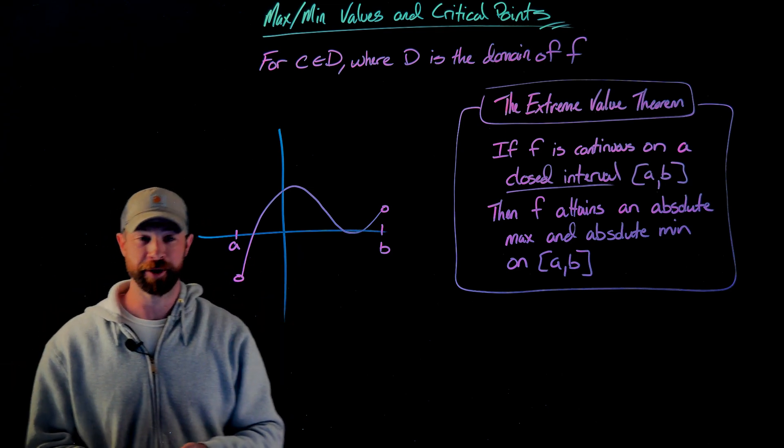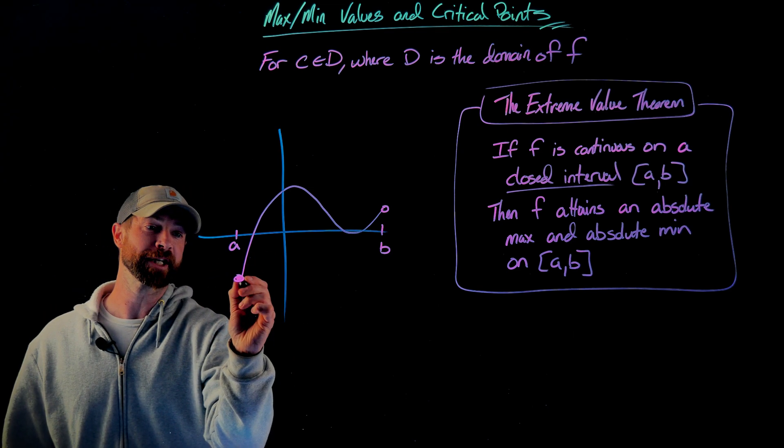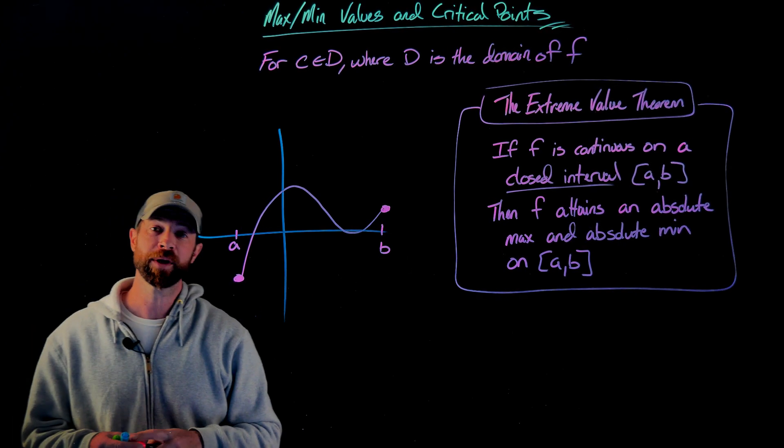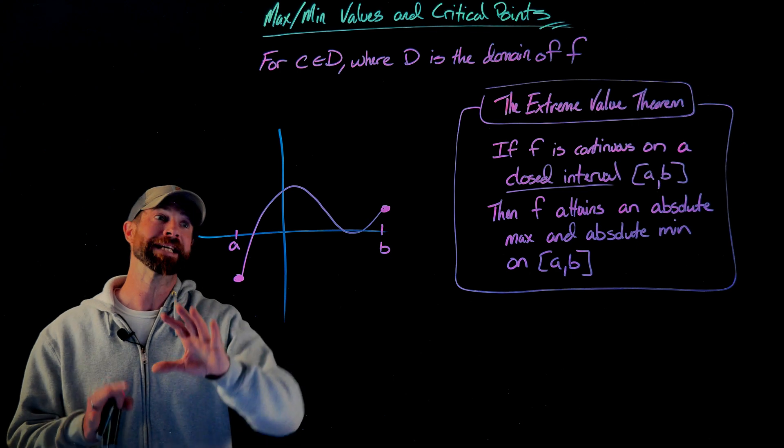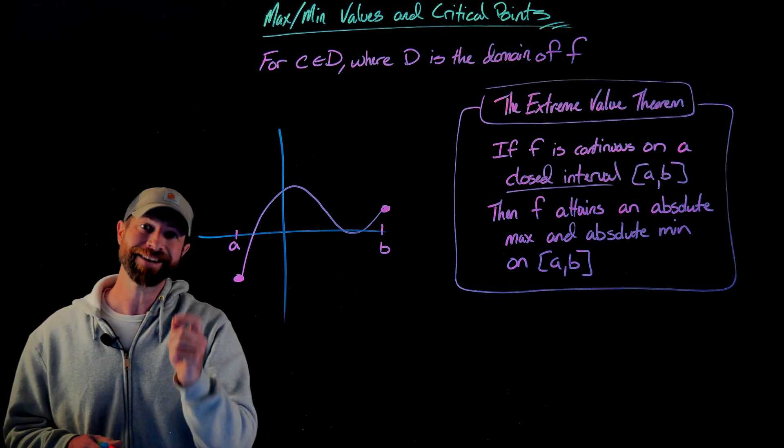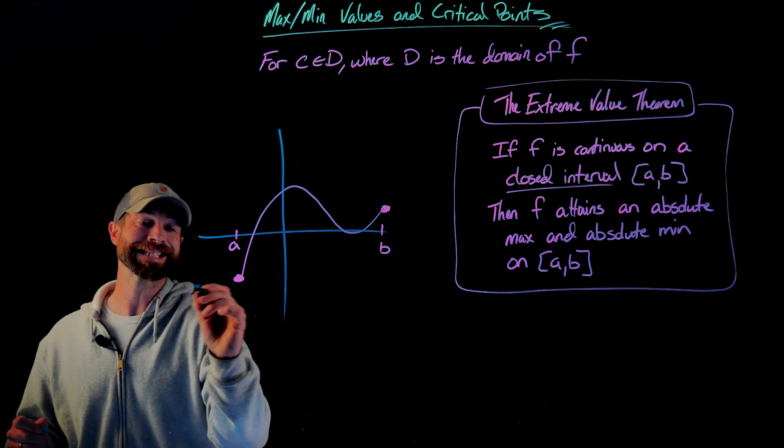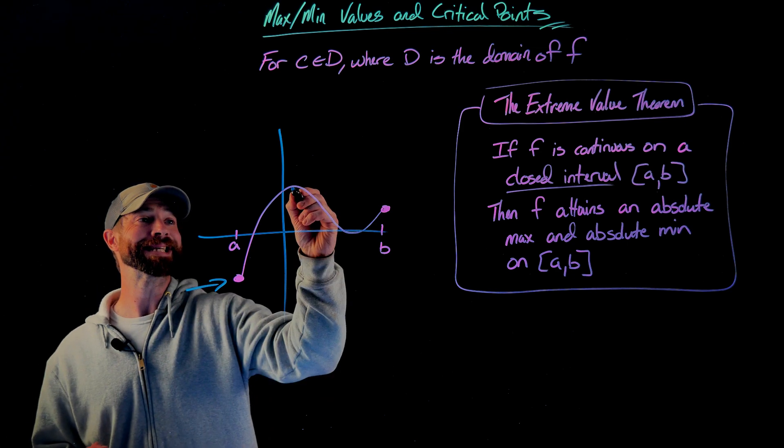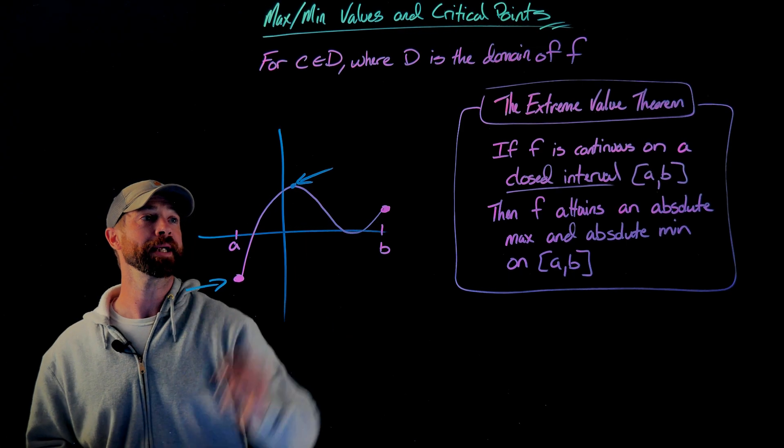The extreme value theorem says you have to have a closed interval, so you go all the way to your endpoints between a and b. Once you do that, as long as your function is continuous on that closed interval, you're guaranteed to have an absolute min value. In this case, that would be this value right here. And an absolute max, in this case, would be this value right here.